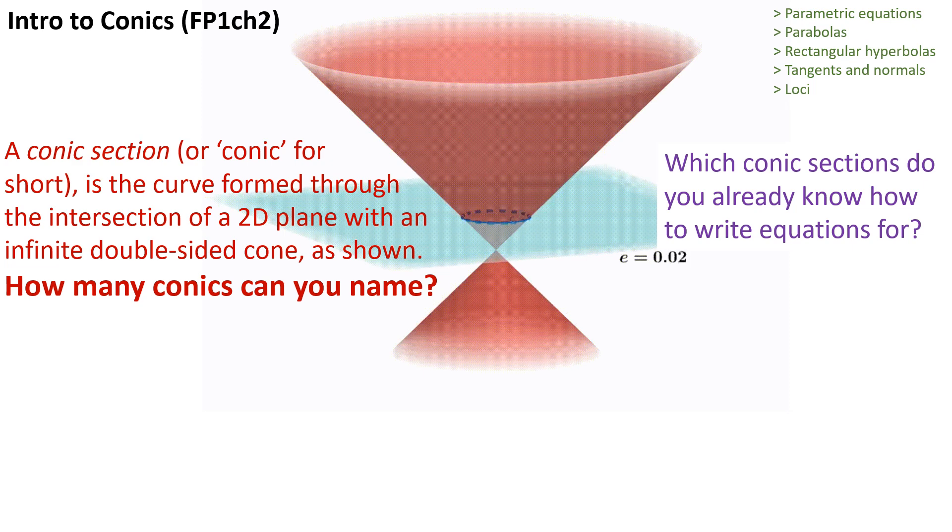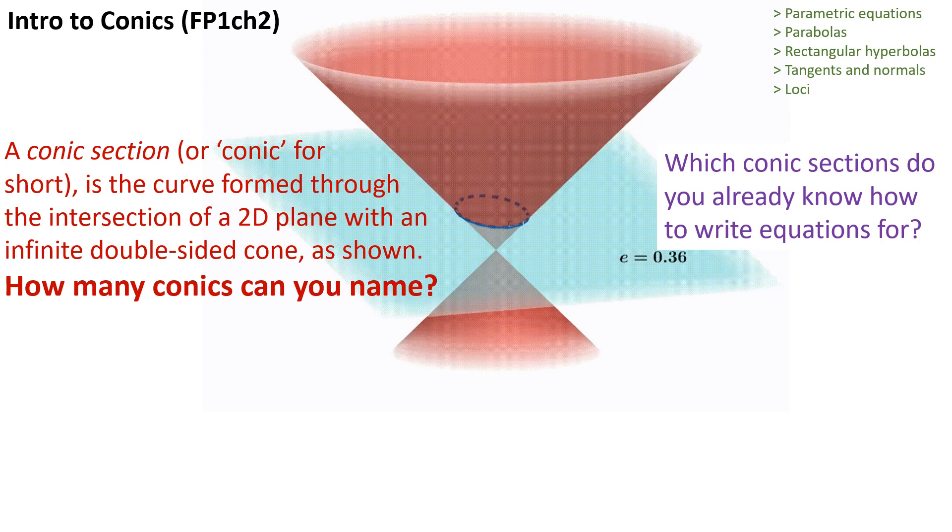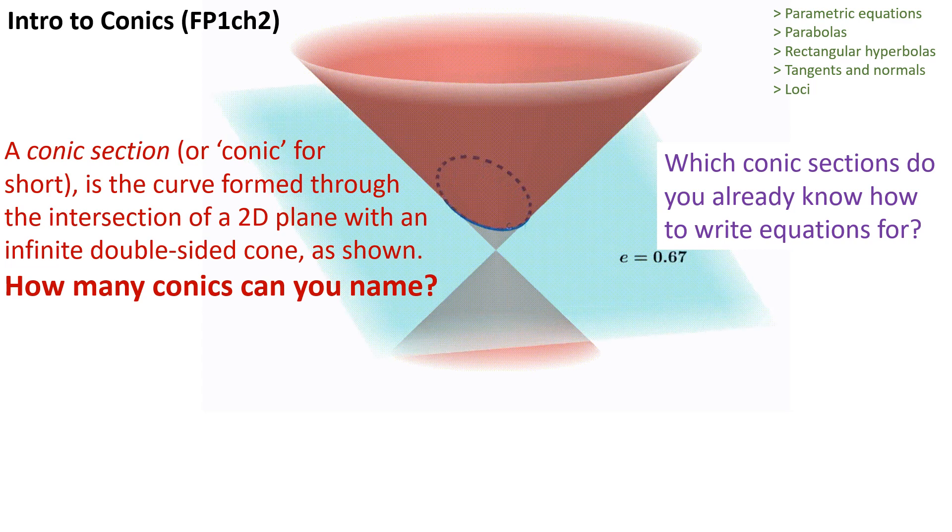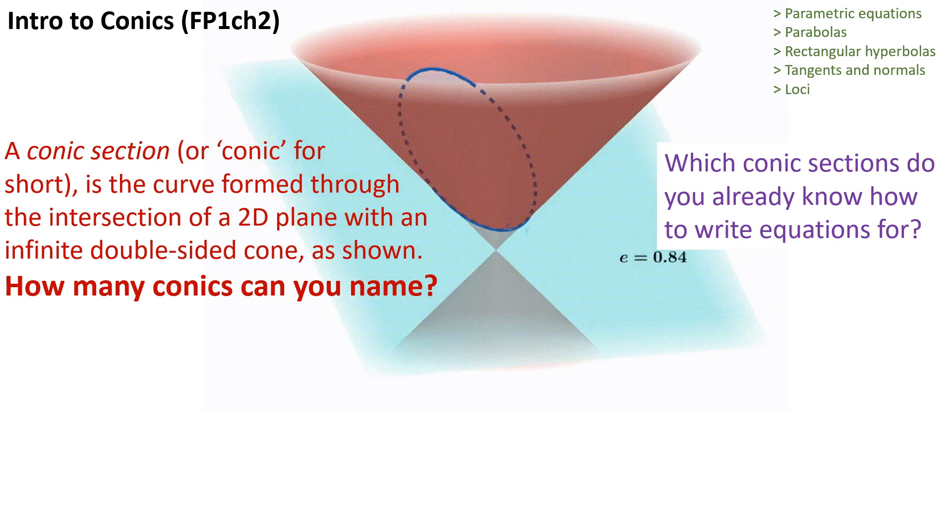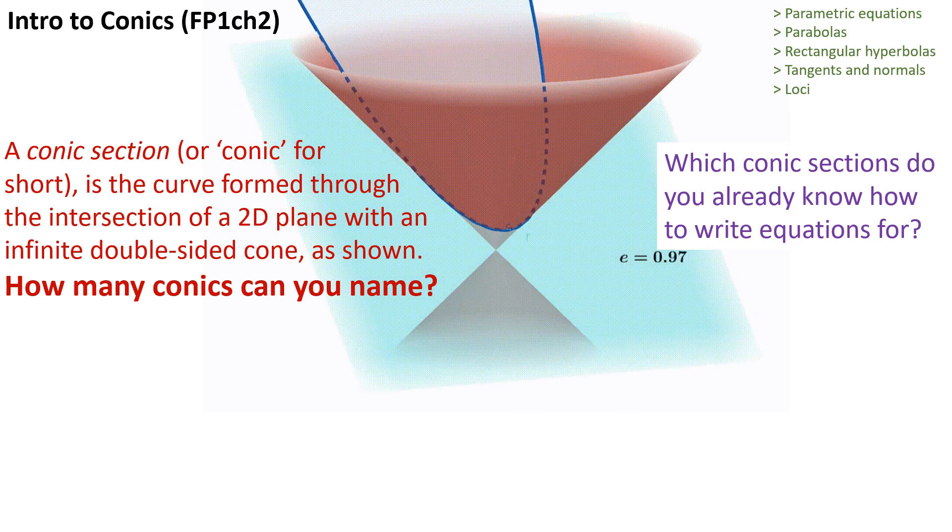Conic sections are special shapes that have been explored and investigated for hundreds, if not thousands of years. The name comes from the idea that you can take a cone, or in this case a double cone, a cone on top of an identical cone reflected underneath, and then slice it with a plane or flat line. The intersection of your plane and the cone produces a family of interesting curves.